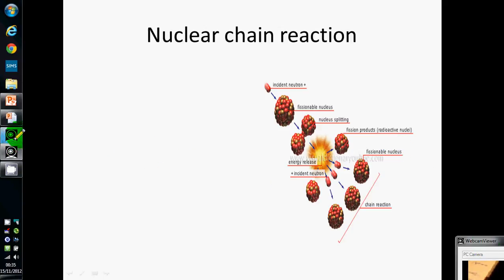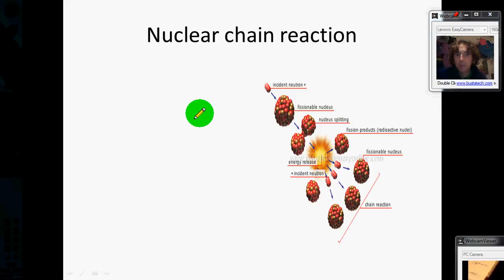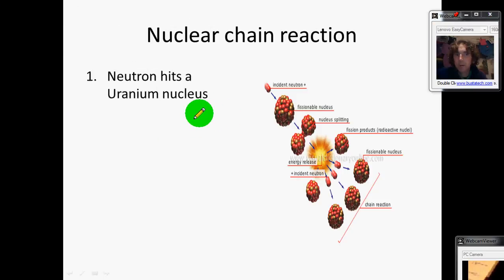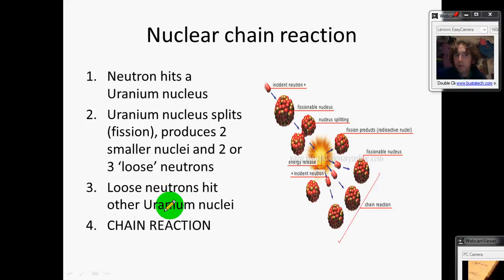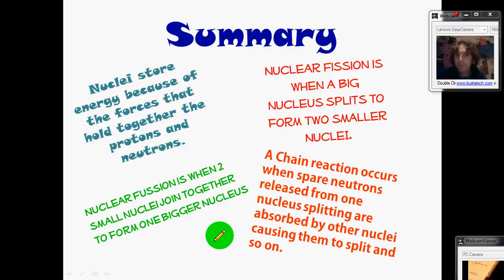Think about a nuclear chain reaction, this time in bullet points: neutron hits the nucleus, causes the nucleus to split, makes some loose neutrons. Loose neutrons hit some more nuclei, they split up, and it's a chain reaction. Bang that into your summary, the idea about a chain reaction.